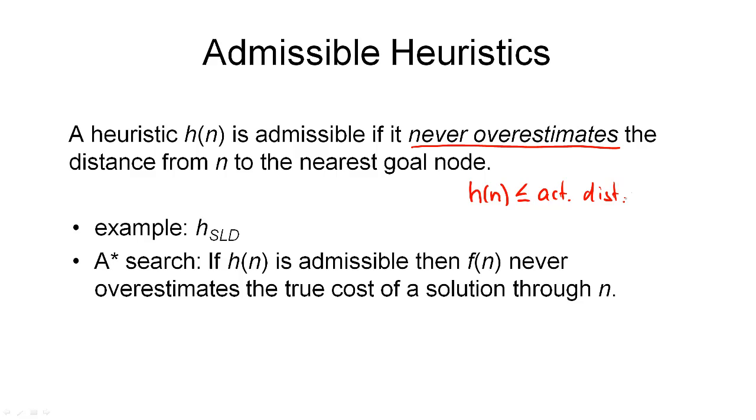Admissible heuristics usually think the nearest goal node is closer than it actually is. They tend to underestimate the distance to the goal. An example of an admissible heuristic is one we have seen for the touring Romania problem, namely the straight line distance. The shortest distance between two points on a map is usually the straight line. Hence, the straight line distance heuristic must underestimate the actual distance along a road. Thus, it is an admissible heuristic.